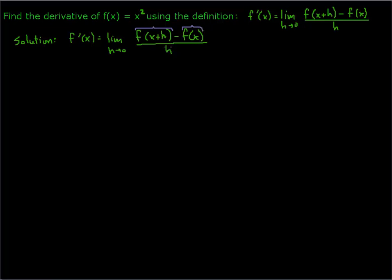This is where students typically run into some problems. f of x plus h means we want to substitute or plug in x plus h wherever x is in our original formula. Our function is a squaring formula, so we're going to square the quantity x plus h. And f of x is just the formula x squared.